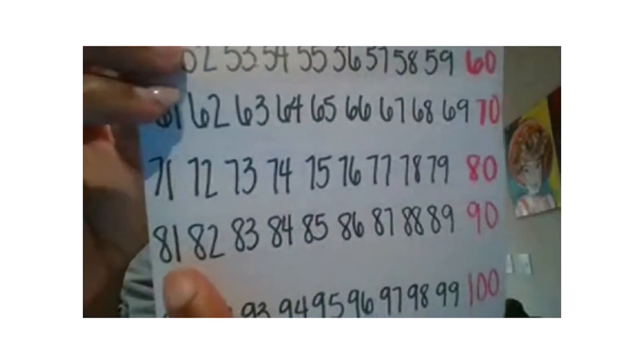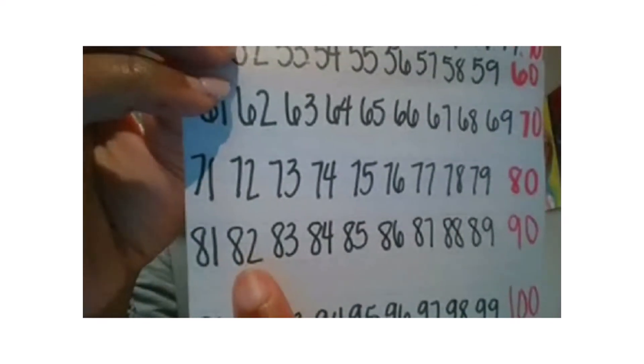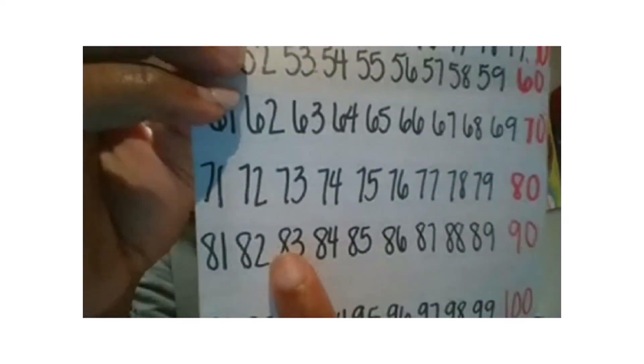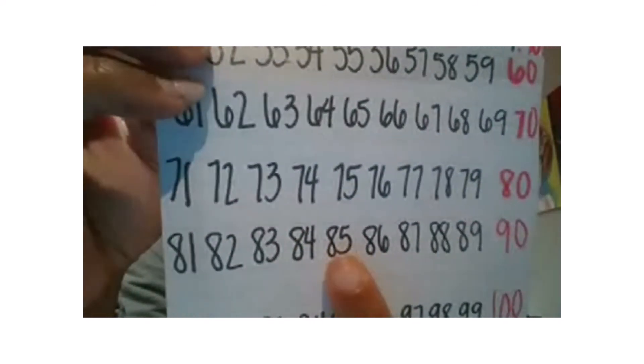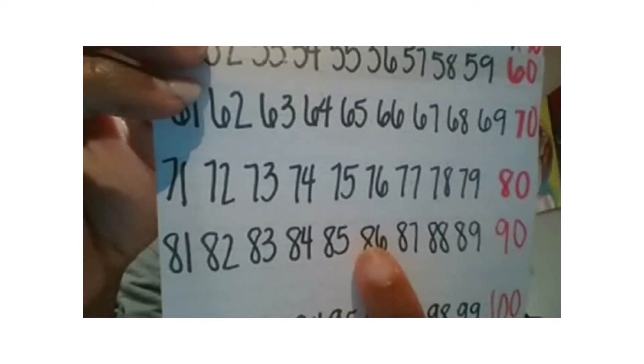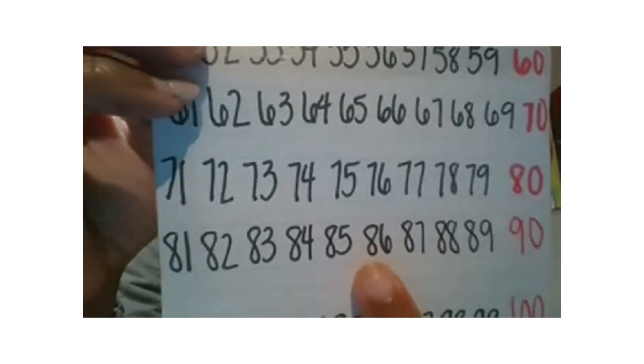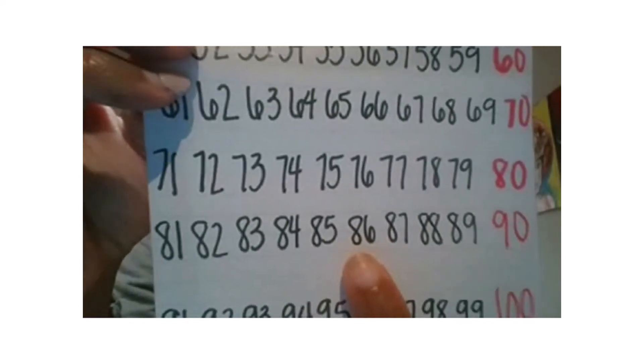Let's keep going. Eight tens one, eight tens two, eight tens three, eight tens four, eight tens five, eight tens six. Eight tens six is what number? Eighty-six. Great job.